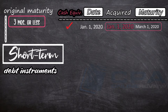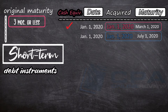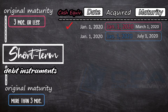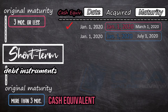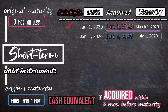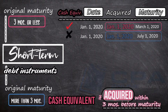Next: an instrument dated January 1, 2020, matures on July 1, 2020 — original maturity is 6 months, which is more than 3 months. It was acquired on January 1, 2020, meaning it was acquired 6 months from maturity. If the original maturity is more than 3 months, it is only classified as a cash equivalent if it is acquired 3 months before maturity. Following this rule, this is not a cash equivalent — it was acquired 6 months before maturity. Instead, this is a short-term investment, since it matures in less than 1 year.